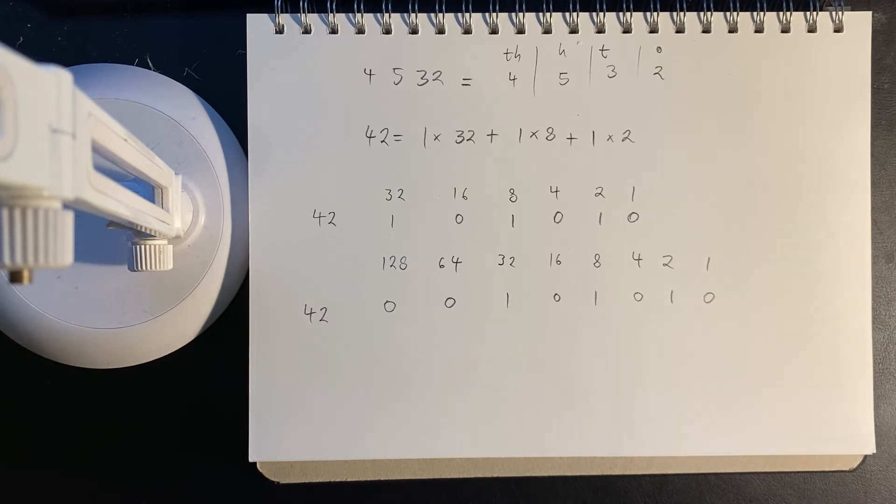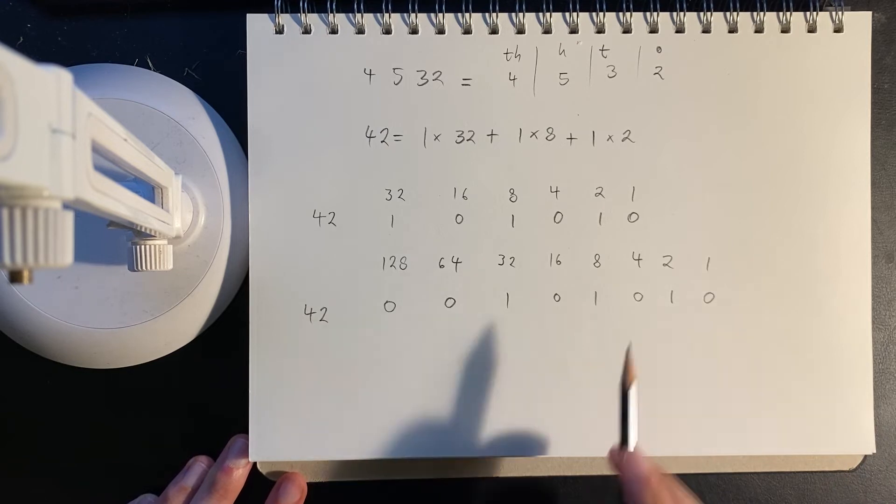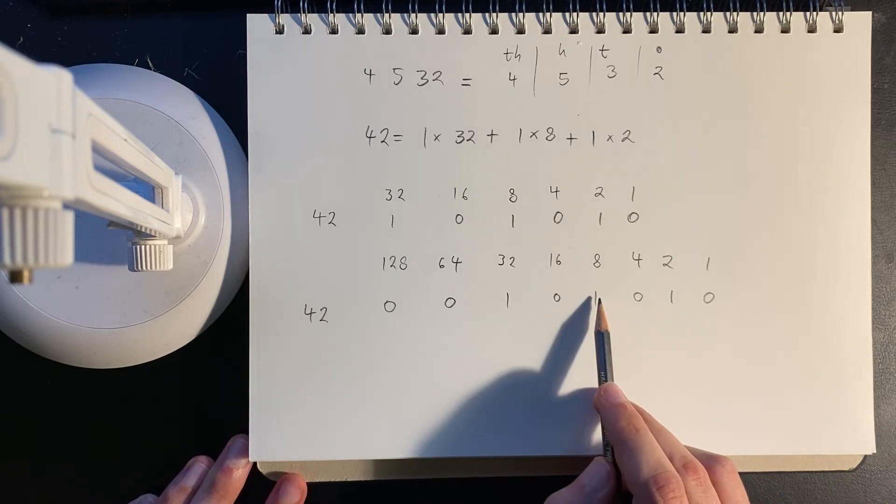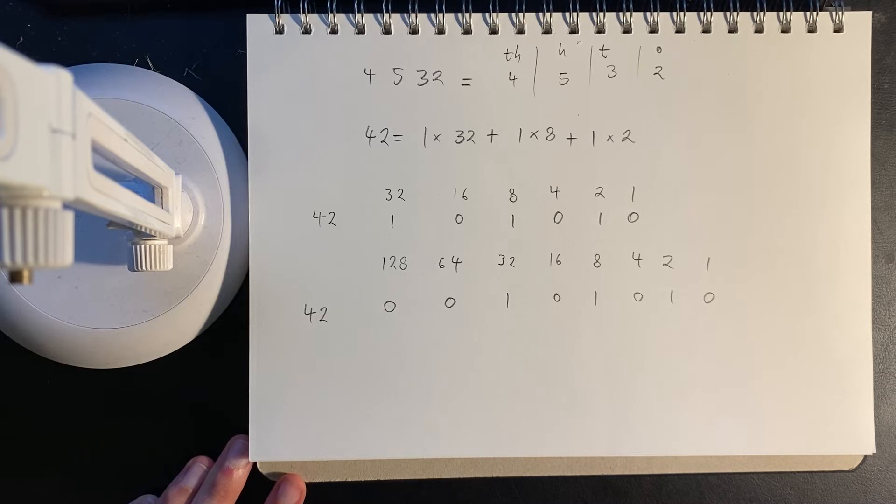Computers represent numbers in this way. They're also capable of performing bitwise operations, specifically bit shifts. What would happen to 42 if we shift it one bit to the left? The digits double as we move from the right to the left, so the number in total would double.